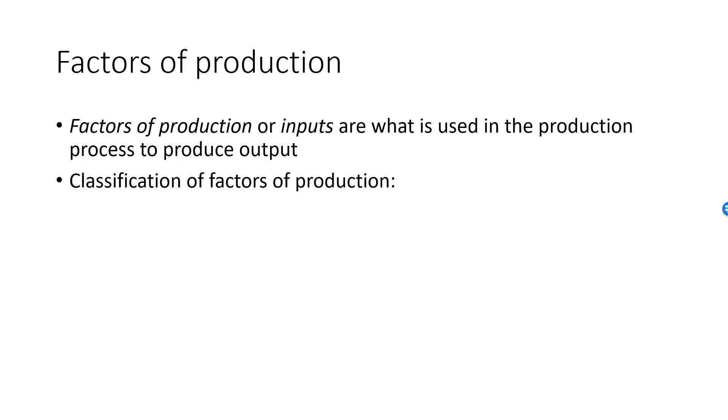We typically classify factors of production into four categories. Land is exactly what it sounds like, a particularly important factor in the production of, for example, crops.